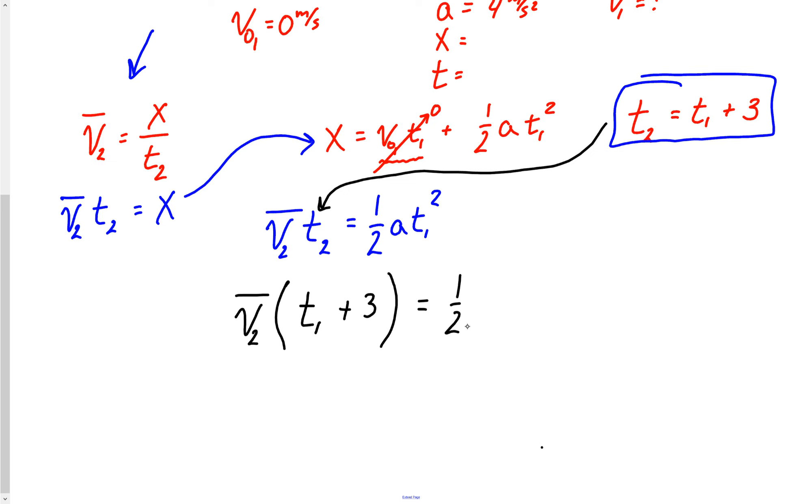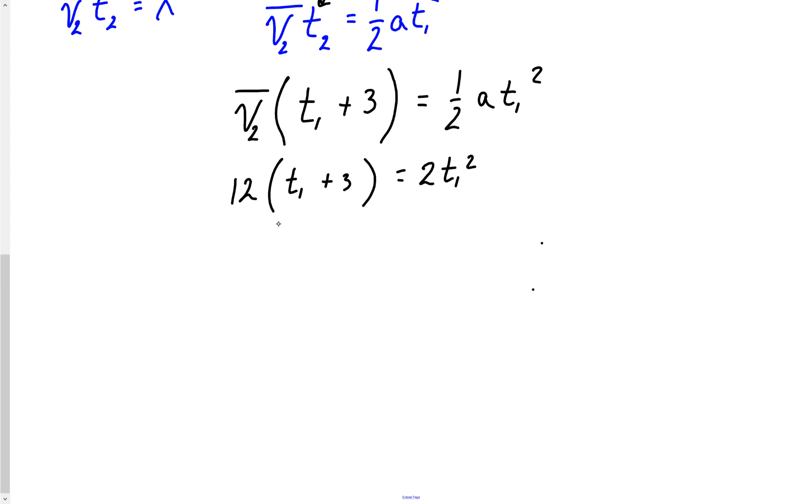So this is V_2 average times T_2, which is T_1 plus 3. And we could continue to algebraic this, but I'm actually going to go ahead and plug in numbers. Hopefully if you're watching this video you can finish this problem if it's just algebra you were after. We know that velocity 2 was 12, so that's 12 times T_1 plus 3 equals half of the acceleration, which was 4. So that's 2 T_1 squared. And so distribute this and we've got 12 times T_1 plus 12 times 3 is 36 equals 2 T_1 squared. And now you should be looking at this going, wait a minute, I've got a square and not a square. Oh no, what am I going to do? Simple. Just go with me.